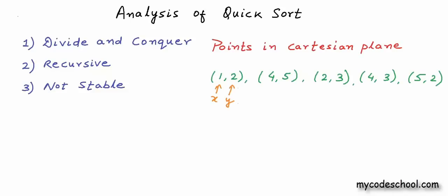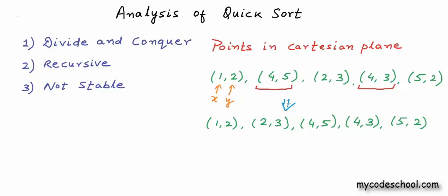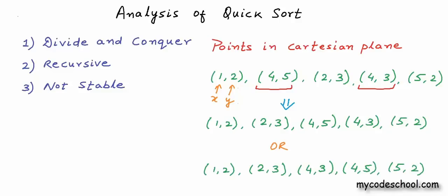For example, let's say we want to sort a list of points in the Cartesian plane. Each record is a pair of integers — x coordinate and y coordinate — and we want to sort in increasing order of x coordinate. If two records have equal x coordinates, a stable sorting algorithm guarantees that point (4,5), which appears before (4,3) in the original list, will also appear before (4,3) in the sorted arrangement. This is not guaranteed with an unstable algorithm. The partitioning logic in quicksort does not ensure stability.